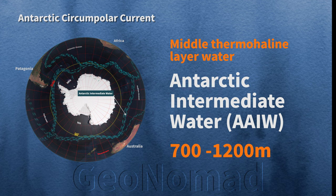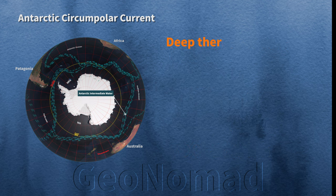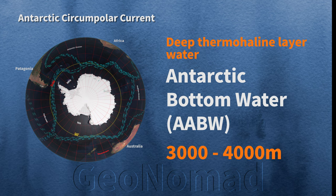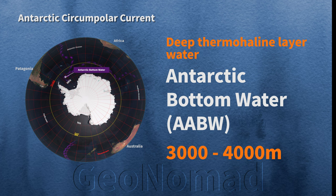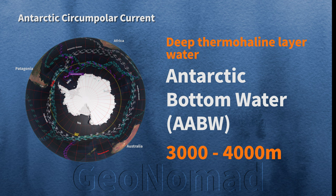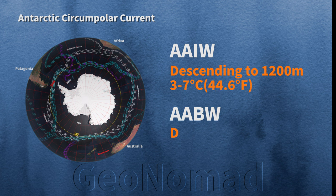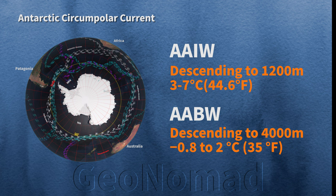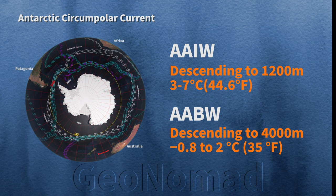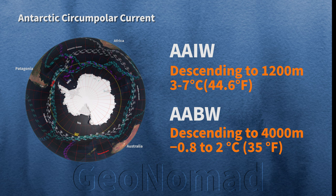This is Antarctic Intermediate Water, or AAIW. In Antarctica, the third layer is the deep thermohaline layer of water flowing between 3,000 and 4,000 meters — Antarctic Bottom Water, or AABW. Antarctica has low solar irradiance, which causes the waters around Antarctica to cool. As it cools, the density of the seawater increases, making it heavier, and the seawater descends vertically. AAIW descends to a depth of 1,200 meters and AABW descends to 4,000 meters.